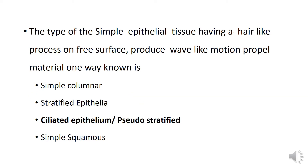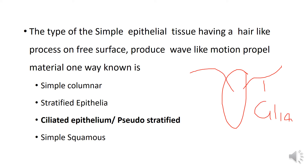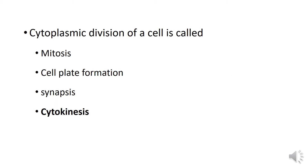This type of epithelium tissue has hair-like structures — it is ciliated epithelium tissue. The cytoplasmic division of a cell is called cytokinesis.